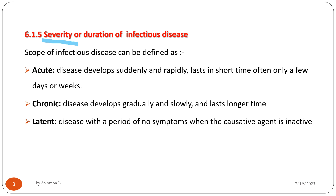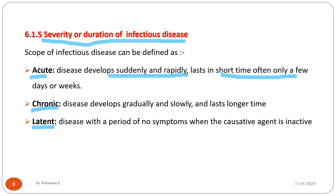Regarding severity or duration of infectious disease: acute disease develops suddenly and rapidly and lasts a short time, often only a few days or weeks. Chronic disease develops gradually and slowly but lasts a longer time. Latent disease is a disease with a period of no symptoms when the causative agent is inactive.